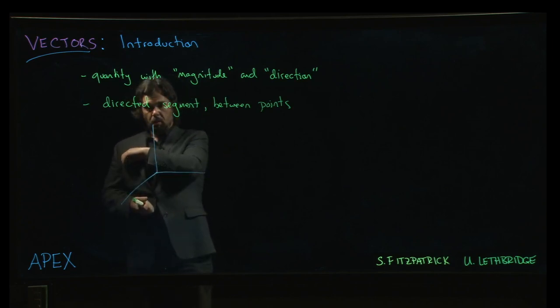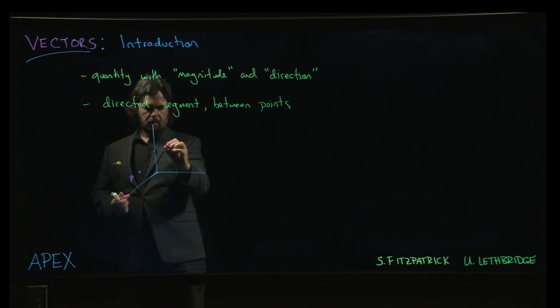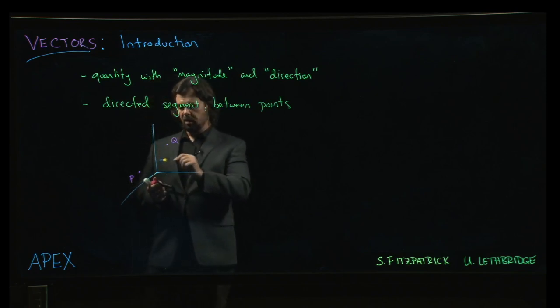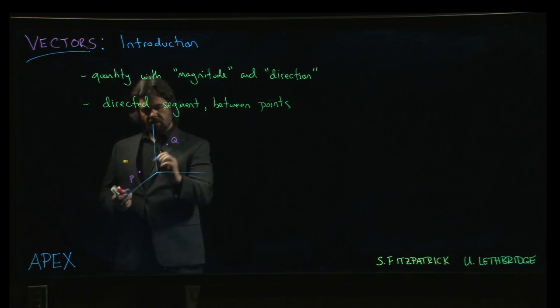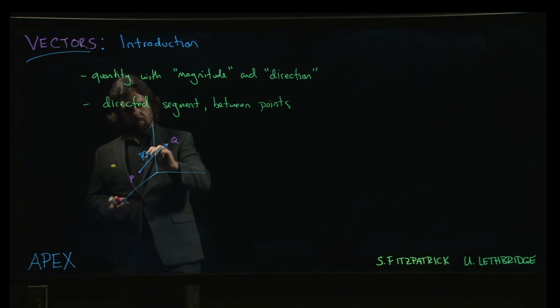So you imagine that you have a pair of points, so there's a point P and there's a point Q. And we want to talk about a vector going from P to Q and we might draw it like this. We picture it as an arrow starting at P pointing to Q. And the notation we'd use for that is the vector PQ, we put the little arrow on top to indicate that we're talking about a vector.